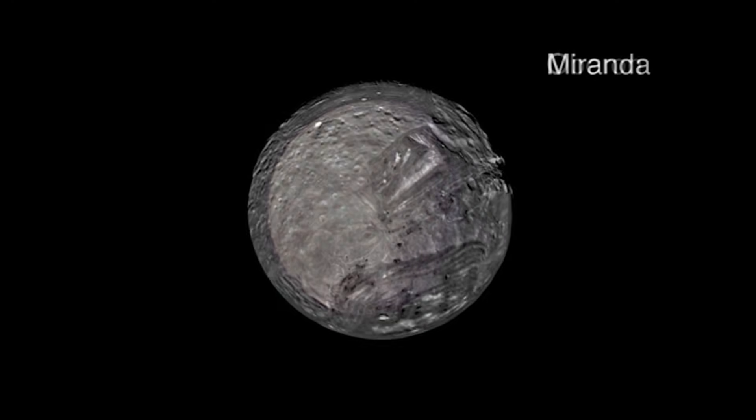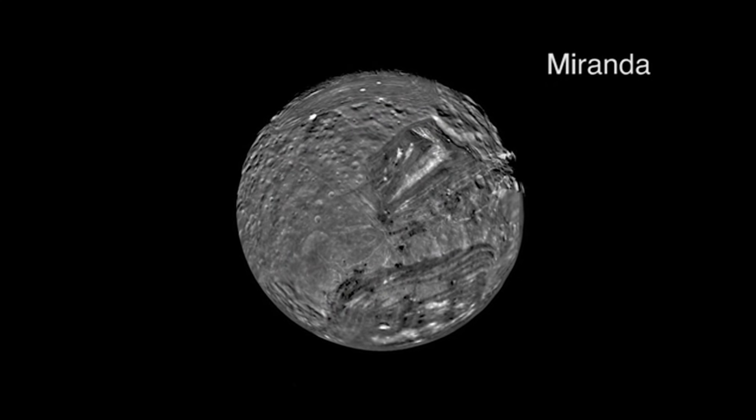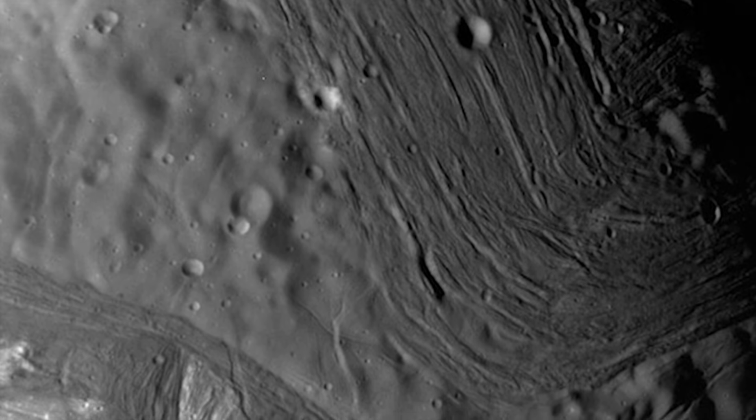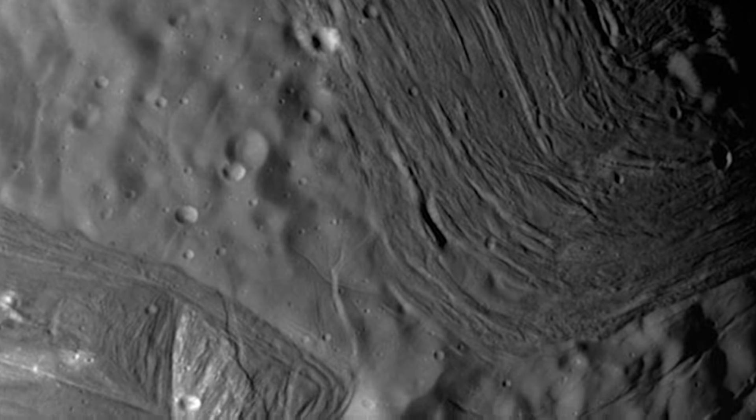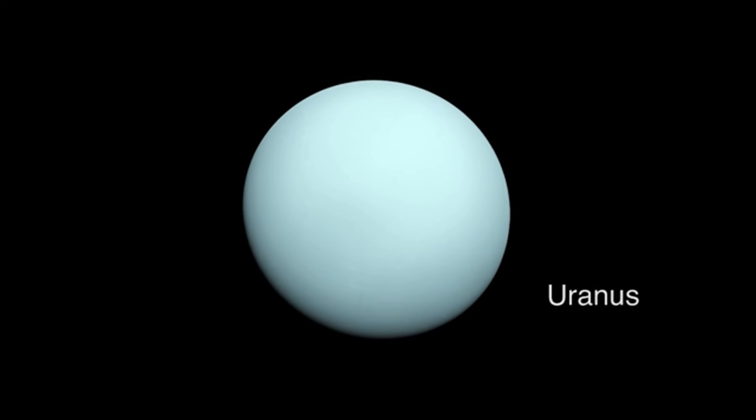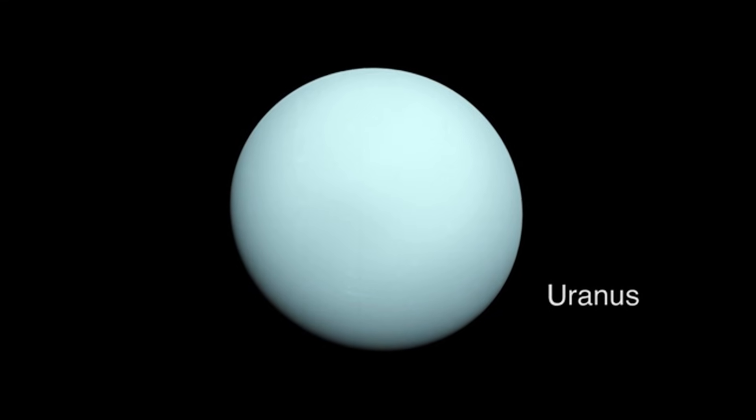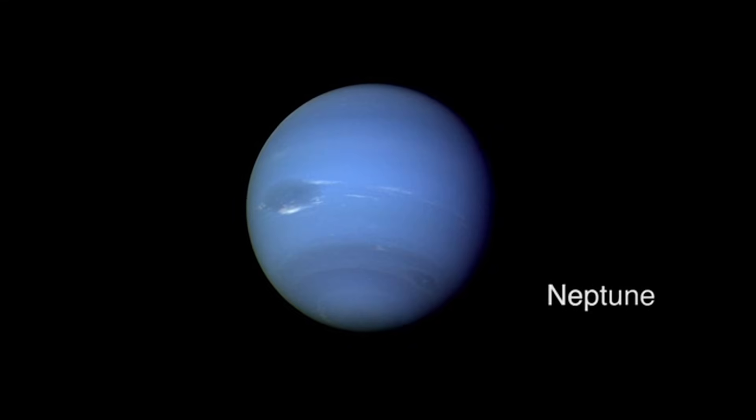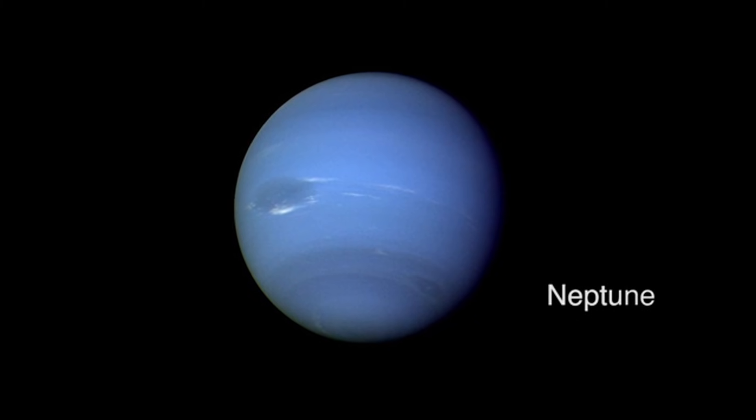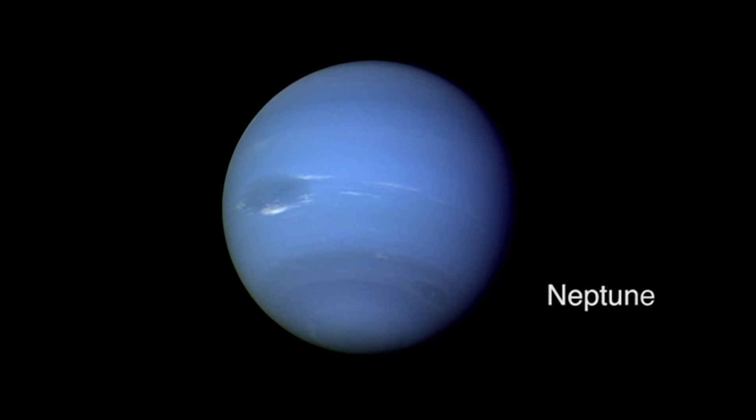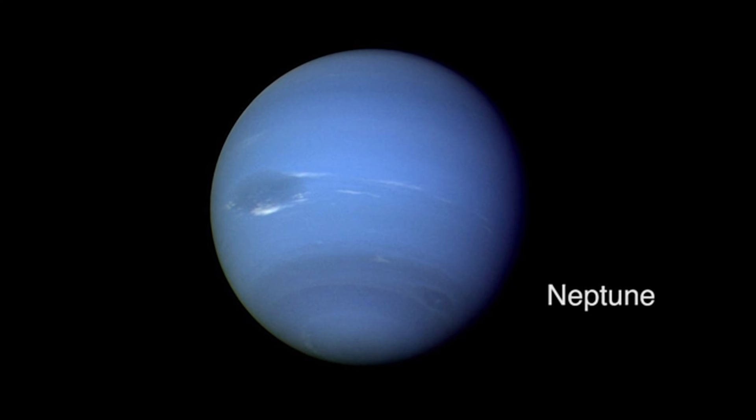After Saturn, Voyager 1's cameras continued inward toward the region of Mars, but in the family portrait, Mars doesn't appear at all. The missing worlds were there. It's one of two missing major planets, along with Mercury. According to NASA, scattered sunlight in the optics washed out Mars completely. The faint red planet was simply drowned in solar glare. Mercury suffered a similar fate, too close to the Sun to be clearly imaged.